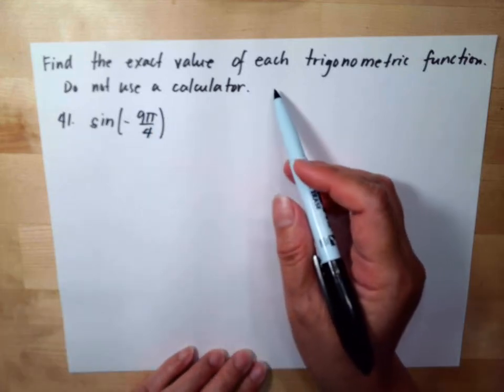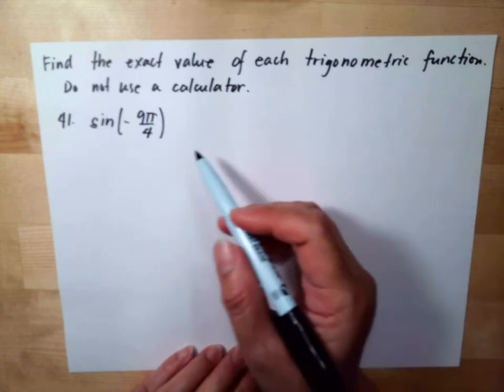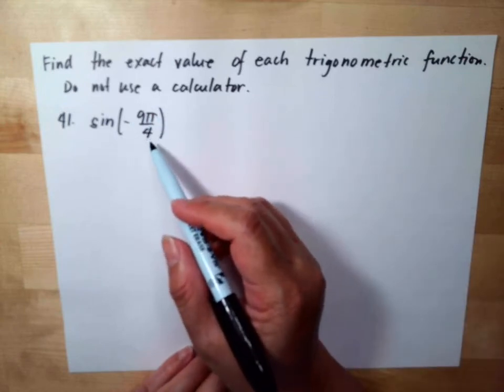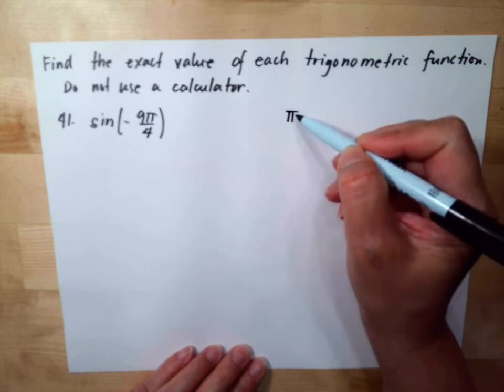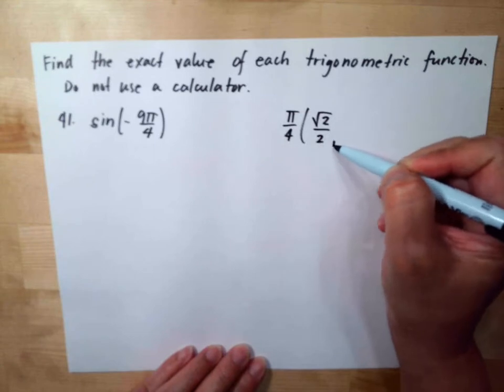Find the exact value of this trigonometric function. Do not use a calculator. So we have sine negative 9π over 4. For π over 4, the coordinates of this are square root of 2 over 2 and square root of 2 over 2.